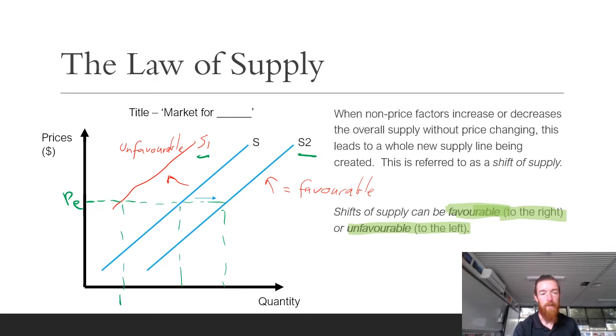So when there's unfavorable shift, we have QE2, that's going to be less demanded overall. If we've got the first one here, that's the original amount demanded. Then if there's a favorable shift, we're going to have more supplied overall.